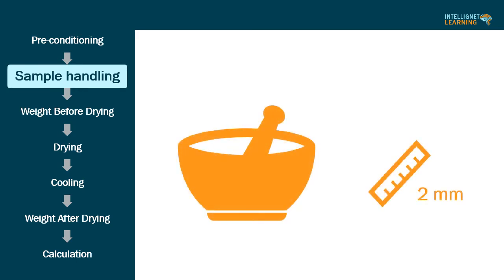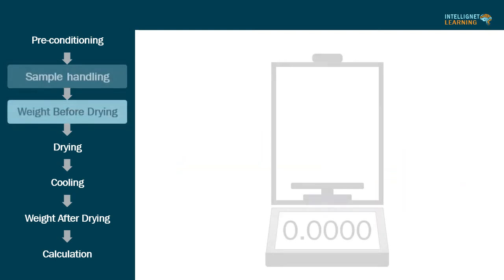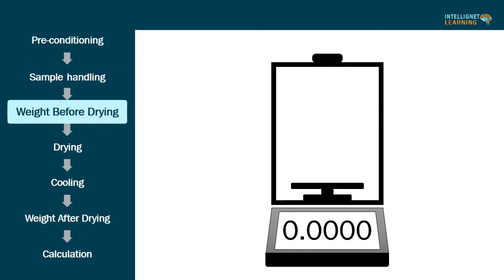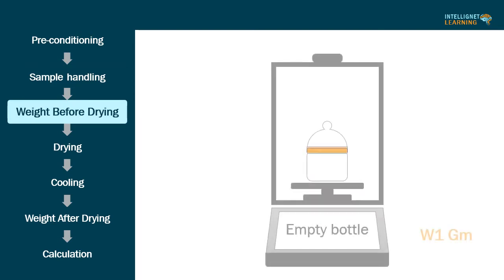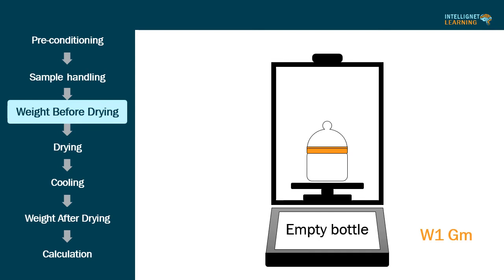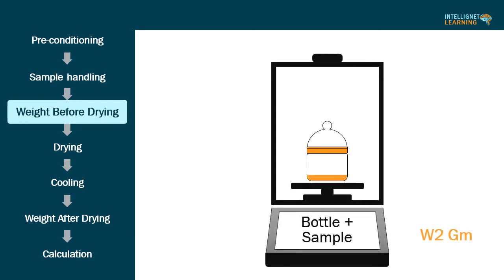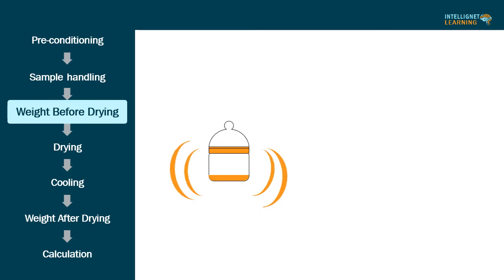Third step, weight before drying: Tare the balance and glass stoppered weighing bottle that has been dried for about 30 minutes under the same conditions to be employed in the determination and cooled to room temperature in a desiccator. Put the test specimen in the bottle, replace the stopper, and accurately weigh the stoppered bottle and contents.